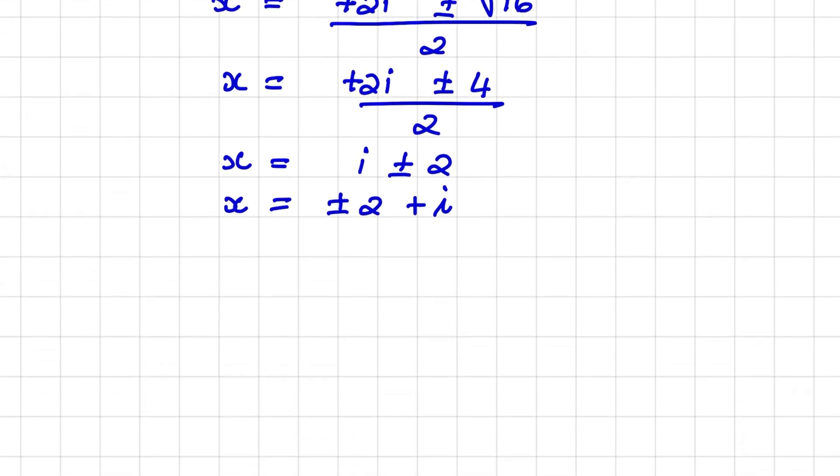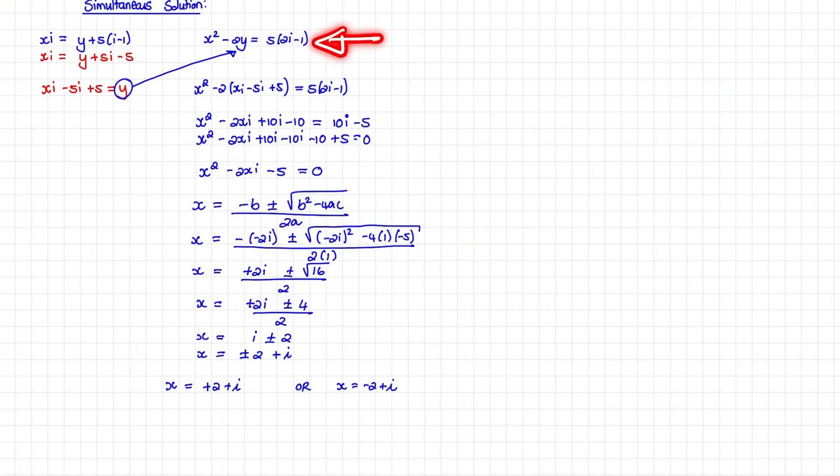So therefore, we have two possible values of x. x can be equal to plus 2 plus i. Or x can be equal to negative 2 plus i. So we have two possible values of x that will help us to satisfy these equations.